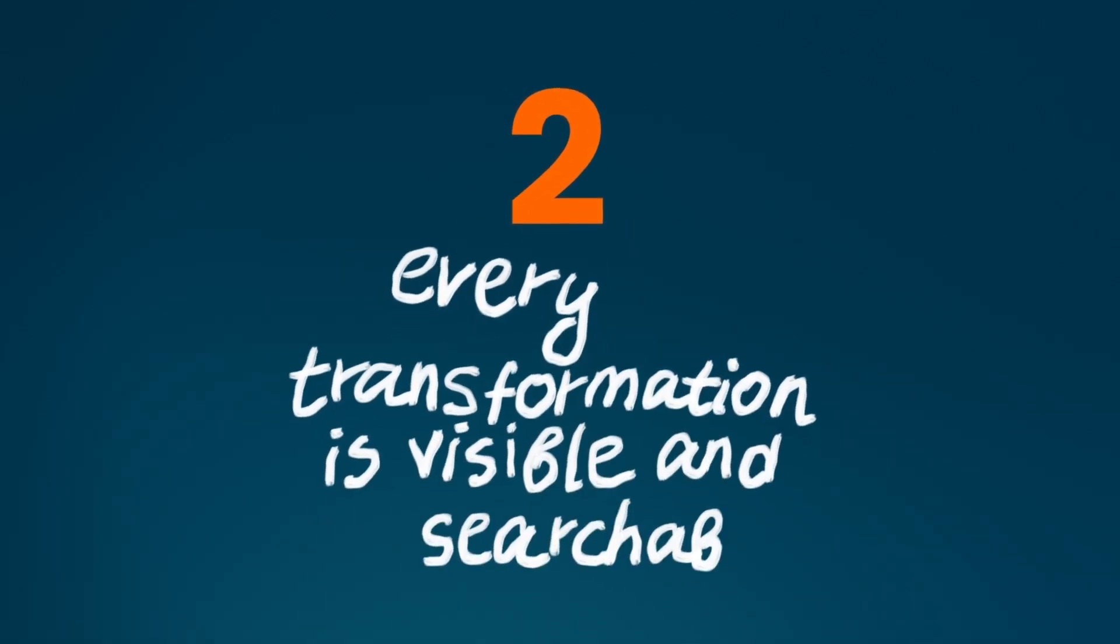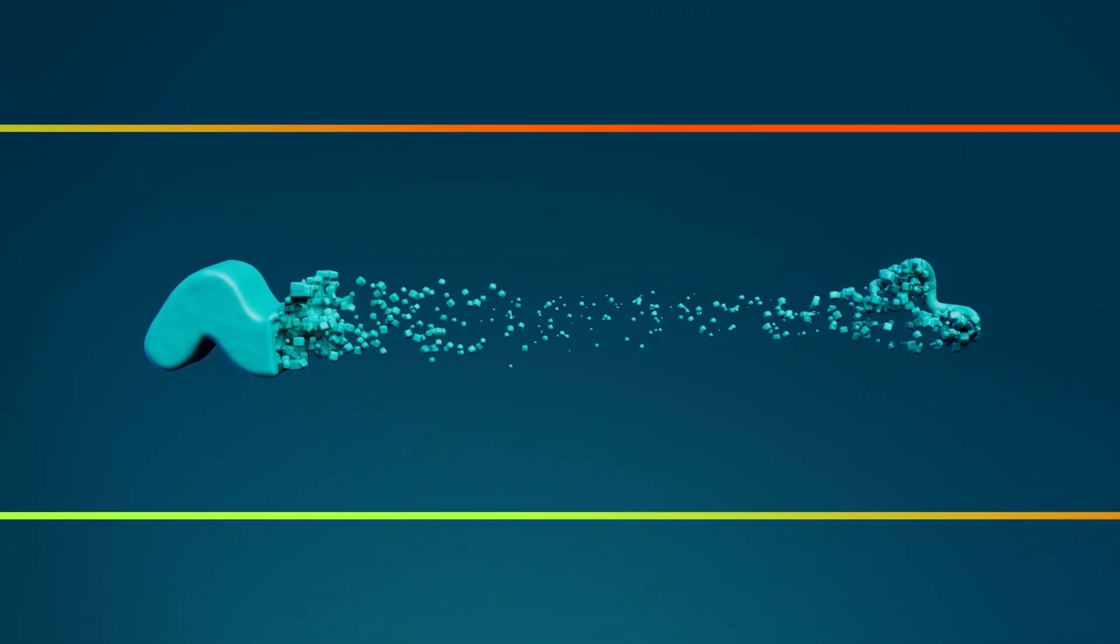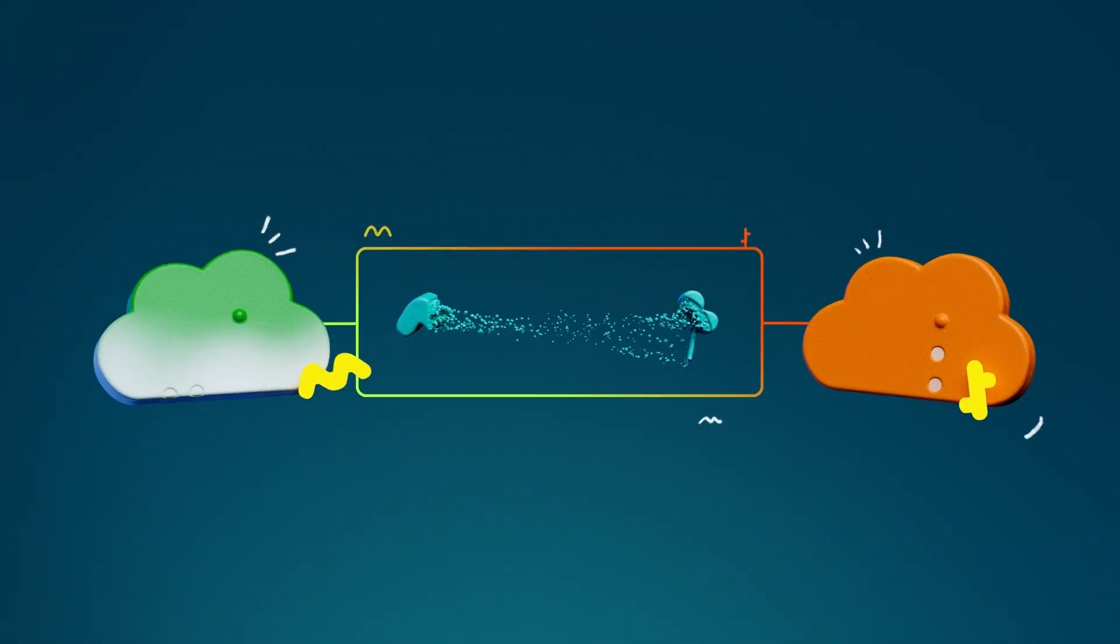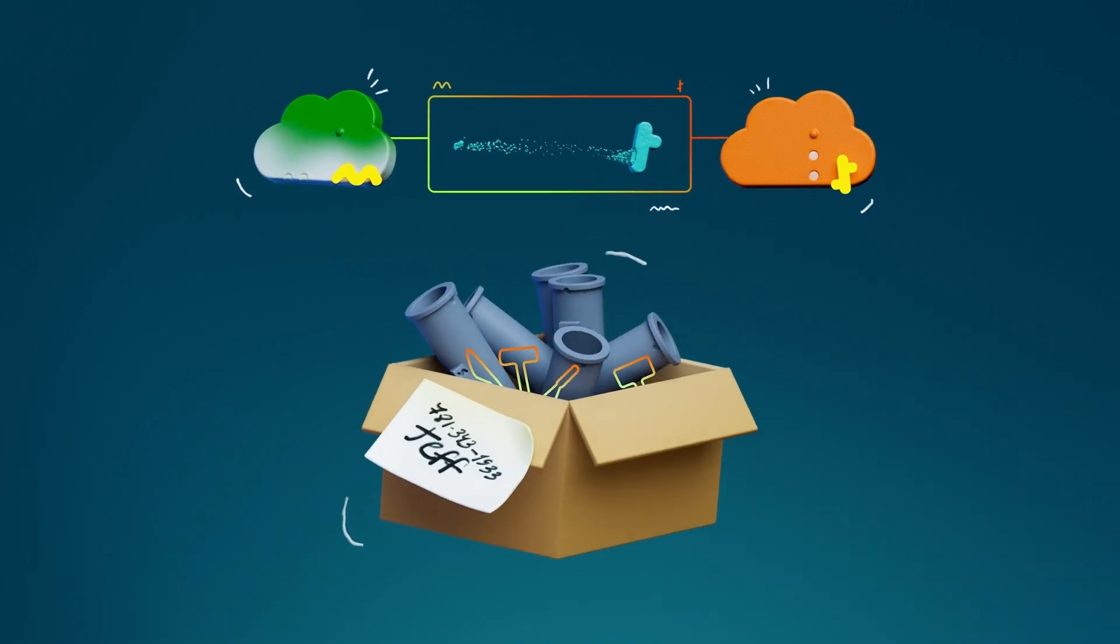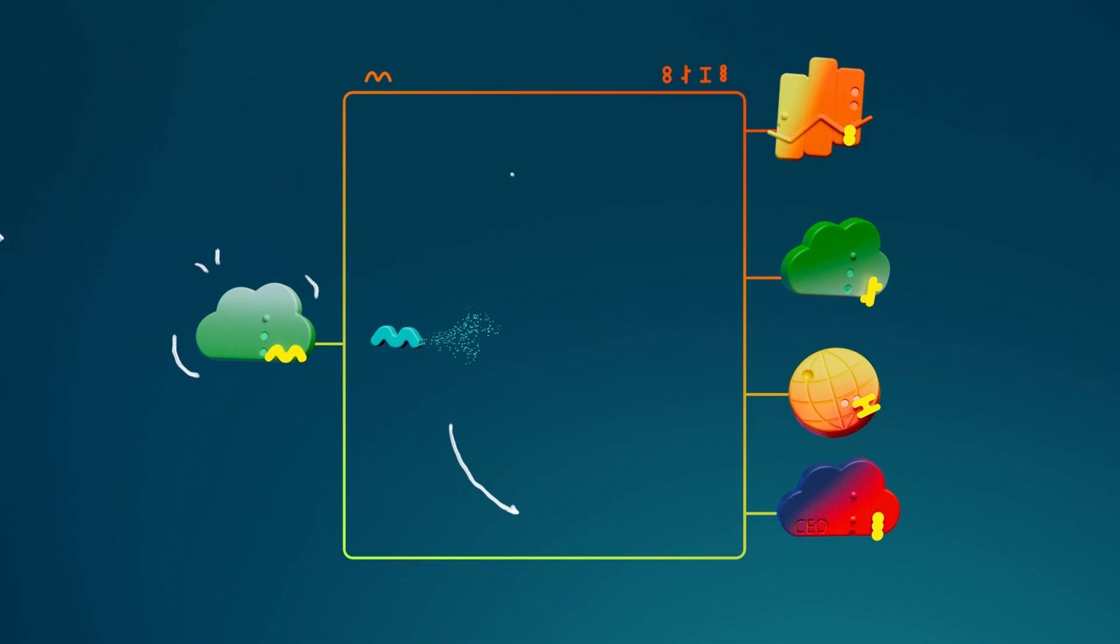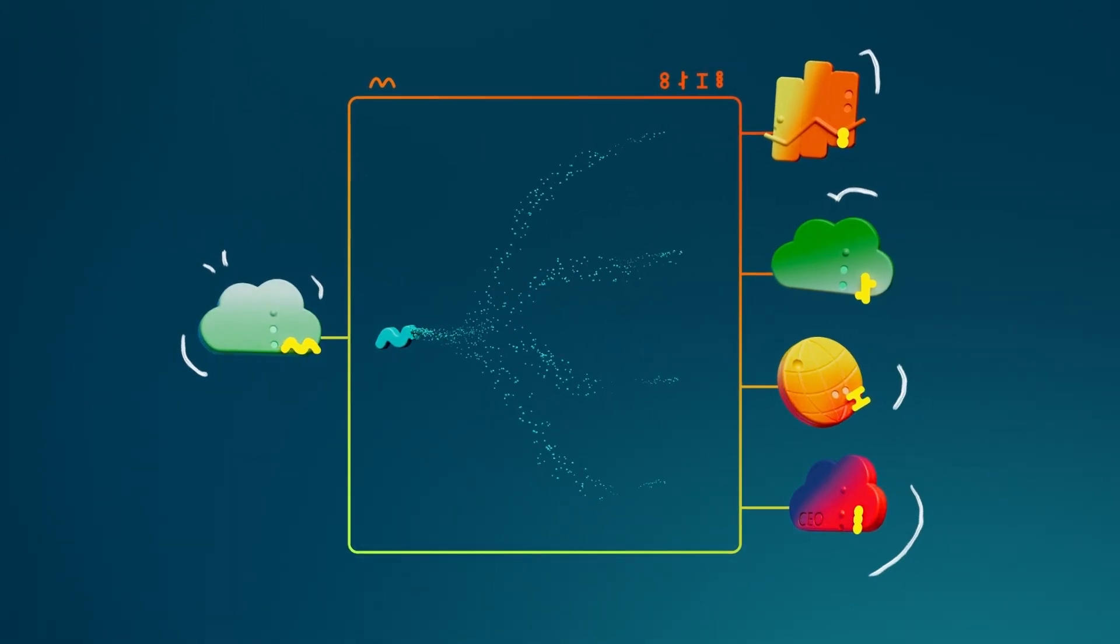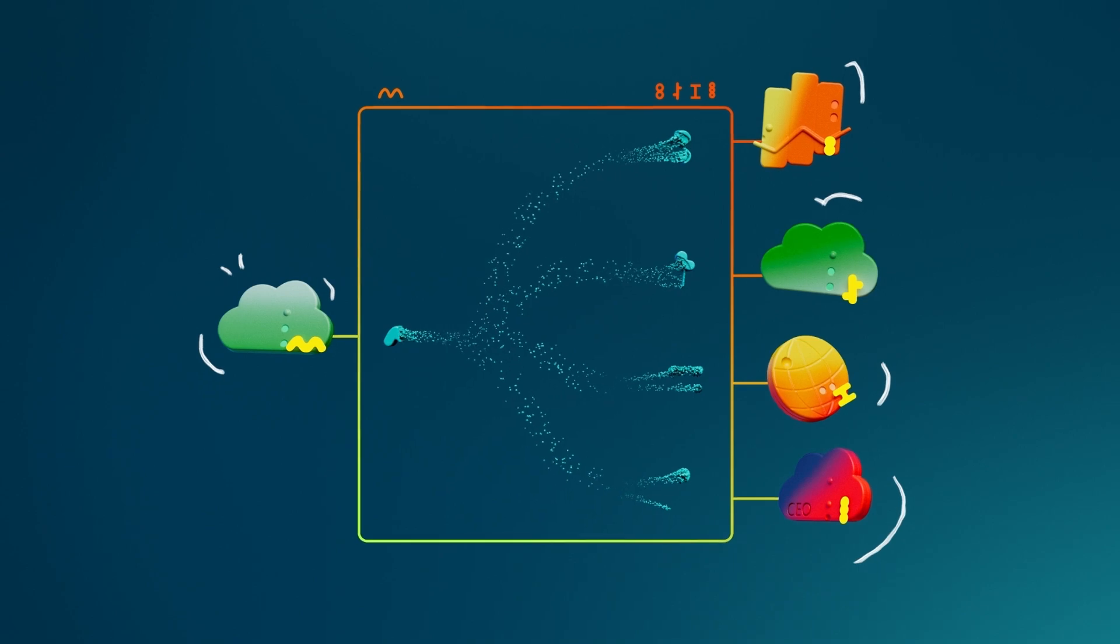Two. MatterBeam makes every data transformation visible. In traditional ETL, use case-specific tweaks are often buried in one of the pipelines built by Jeff, who left the company last week and took all the answers with him. MatterBeam breaks ETL into its constituent parts, making every non-destructive transformation clearly visible within our interface so you never have to call Jeff again.